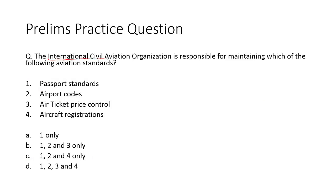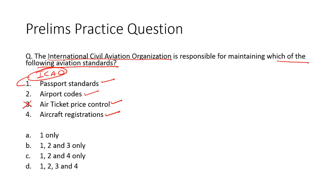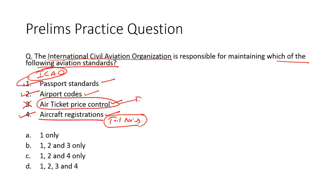The third question: the International Civil Aviation Organization is responsible for maintaining which of the following aviation standards? The options are passport standards, airport codes, air ticket price control, or aircraft registration. Out of the four given options, the third one is incorrect. The ICAO is responsible for laying down standards for passports, for airports, and for the registration of aircrafts — that is the tail numbers you find on aircrafts. But the ICAO is not responsible for regulating the prices of air tickets; this is left to the regulators in the respective countries. So options one, two, and four are correct — Option C is the right answer.